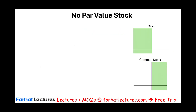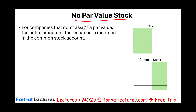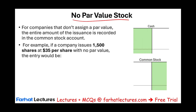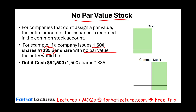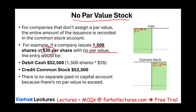Now let's look at when a company sells no par value stock — that's easy. If they don't assign any par value, let's assume the company sold 1,500 shares at $35 with no par value. Take 1,500 times $35: the cash received is $52,500. Common stock is also $52,500. Because we have no par value, there is no additional paid-in capital — everything is put into common stock.